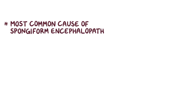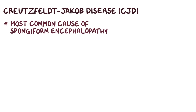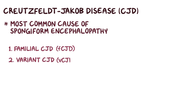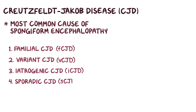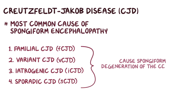The most common cause of spongiform encephalopathy is Creutzfeldt-Jakob disease, or CJD, and there are actually four types of CJD: familial or FCJD, variant or VCJD, iatrogenic or ICJD, and sporadic or SCJD. All four types cause spongiform degeneration of the cerebral cortex and cerebellum.